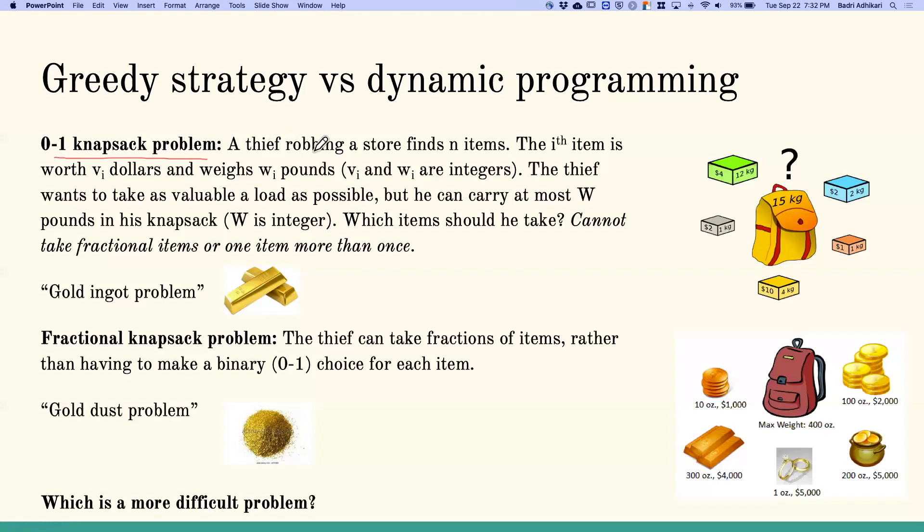In the 0-1 knapsack problem, a thief robbing a store finds N items. As shown in the picture, the ith item is worth Vi dollars and weighs Wi pounds. The thief wants to take as valuable a load as possible, but can carry at most W pounds. The question is: which items should he take? He cannot take fractional items or one item more than once.